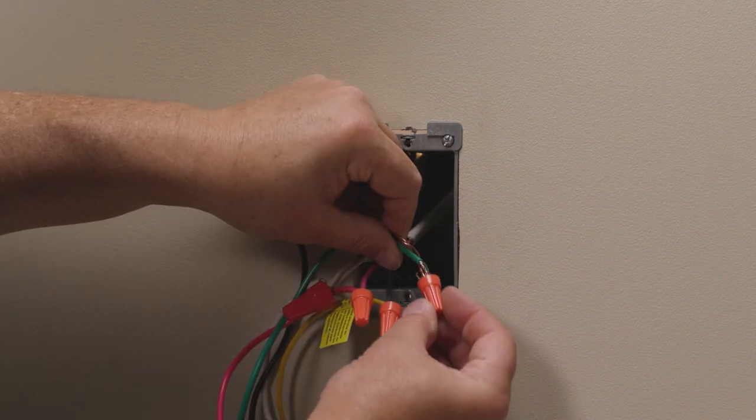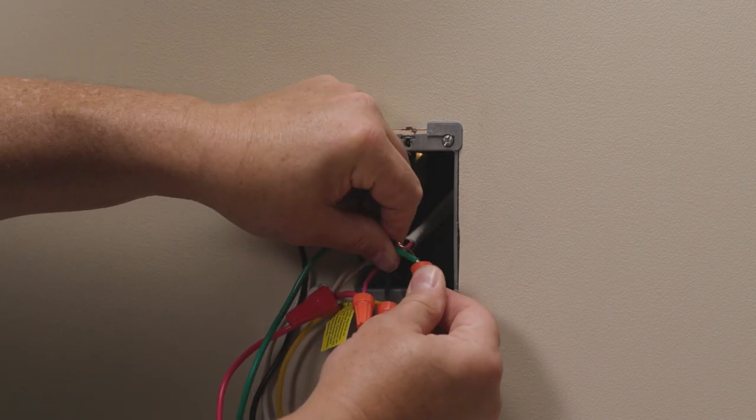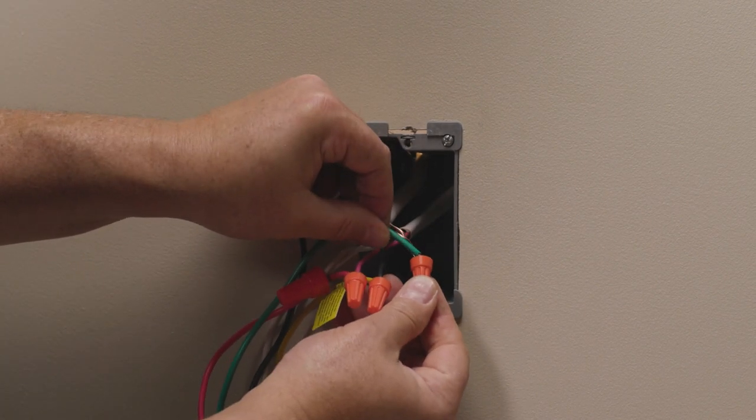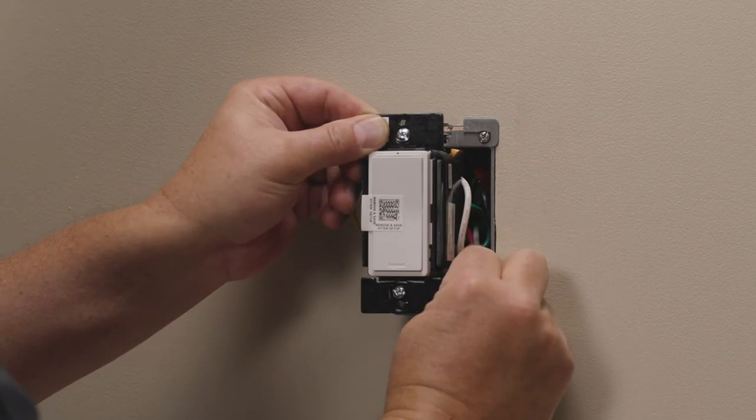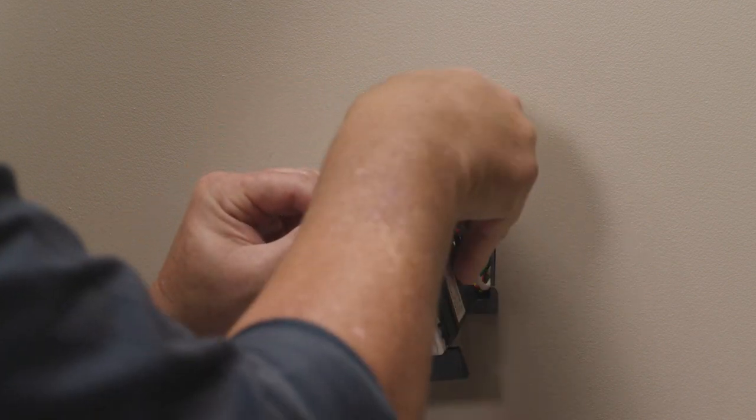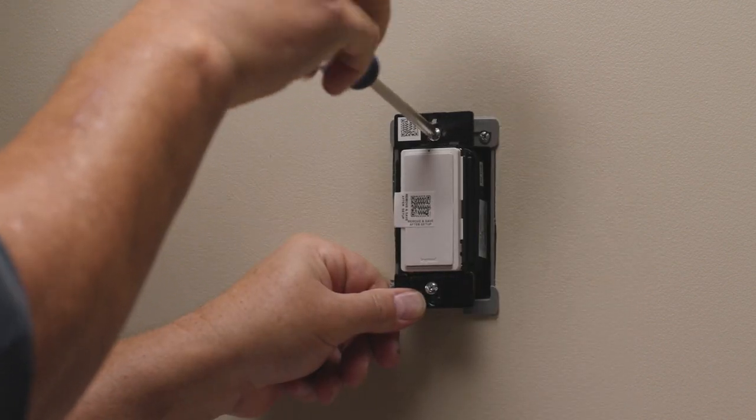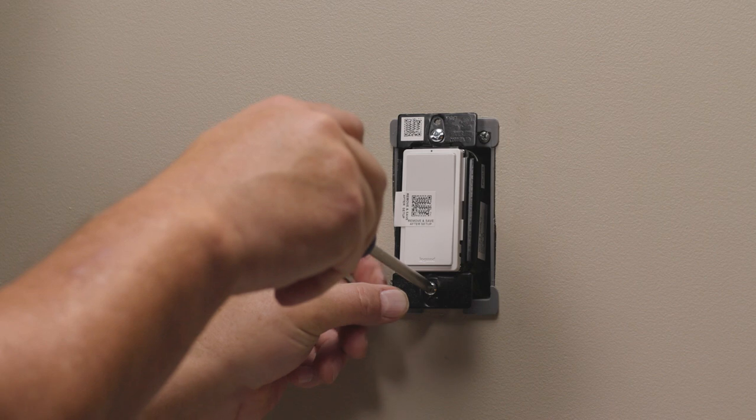And finally, connect the green ground wire from the switch to the ground wire in the box using a wire nut to secure the wires together. Gently fold the wires into the electrical box, being careful not to pinch a wire or loosen any wire nuts. Use the device screws to secure the smart switch to the electrical box.